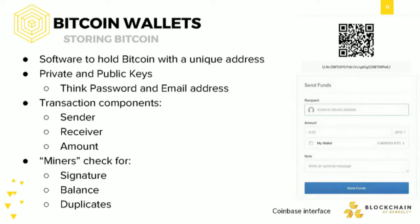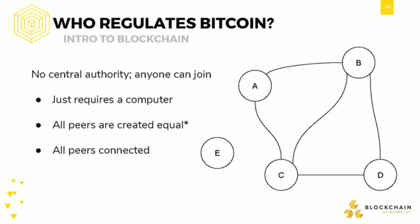You can see all the transactions that have come into an account, and how much money is in someone's account. This leads to the question: wasn't the whole point of Bitcoin to be anonymous? The thing is, Bitcoin is not actually anonymous — it's something called pseudonymous. Anyone can look and see how much money is in a particular account, but what they can't see is who owns which account. There are currencies working towards full anonymity, such as Zcash.